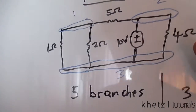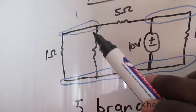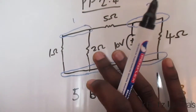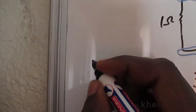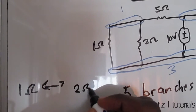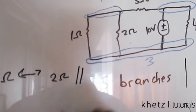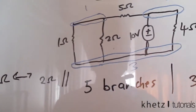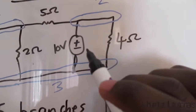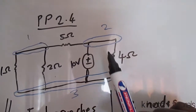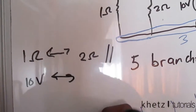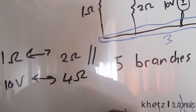The first node and the third node are shared among the 1 ohm and the 2 ohm resistor, so the 1 ohm and the 2 ohm are in parallel. If we look at the other side, the second node and the third node are shared among the voltage source and this resistor — they share that node and that node — so the 10 volt voltage source and the 4 ohm resistor are also in parallel.